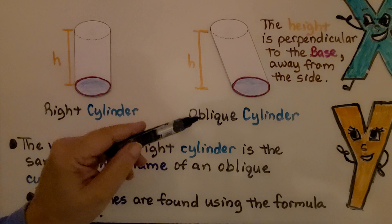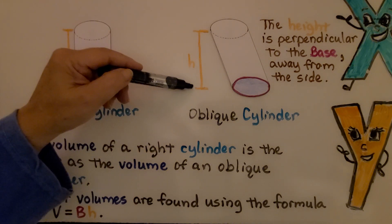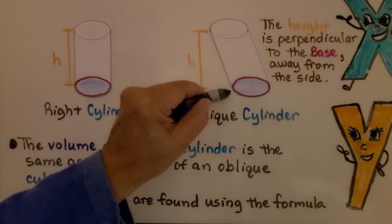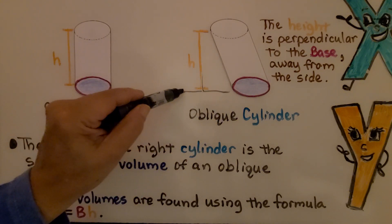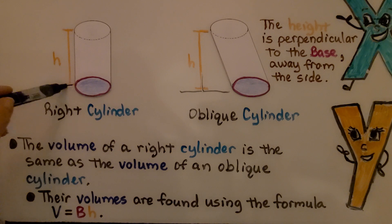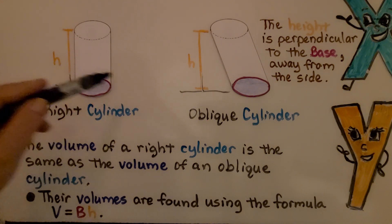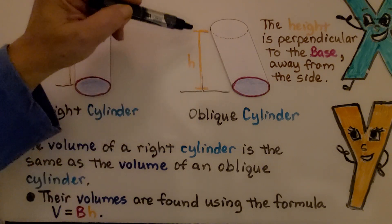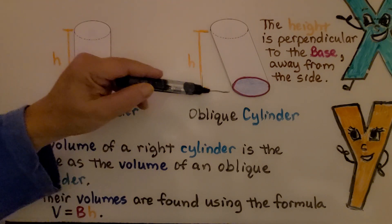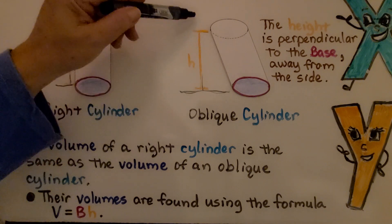But on the oblique cylinder, the height is perpendicular to the base away from the side. This one is also perpendicular to the base, except this one is leaning. So this is not the height along the side here. The height is away from it, perpendicular to the base and then up.